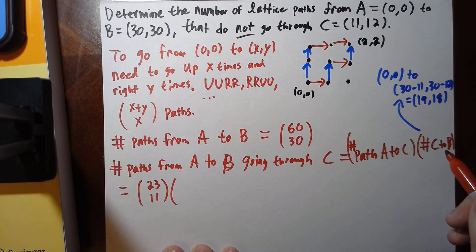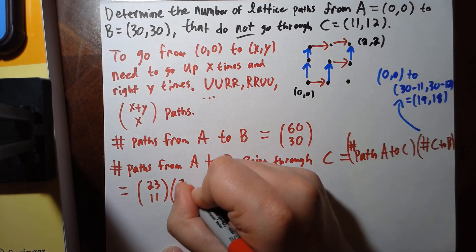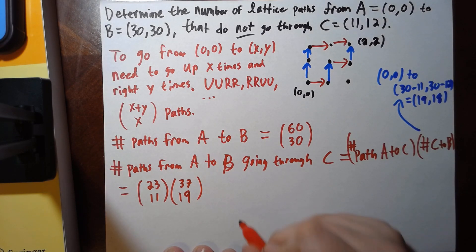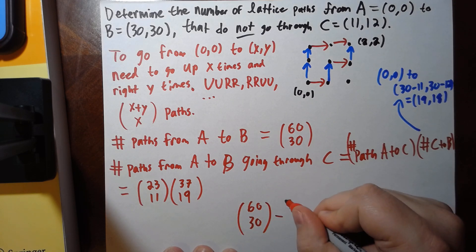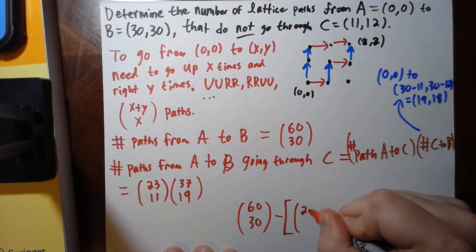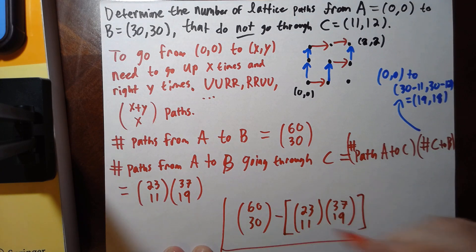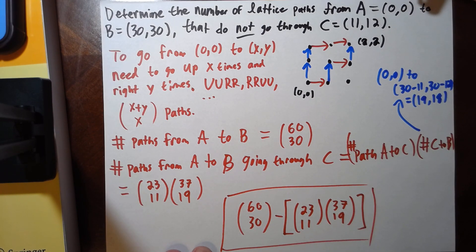So the answer is going to be (60 choose 30) minus (23 choose 11) times (37 choose 19). And that's the final answer. Thanks for watching.